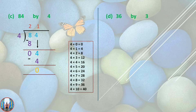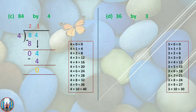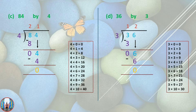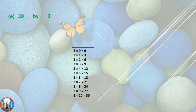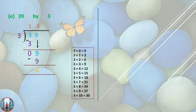Question D: 36 by 3. We write the table of 3. 3 ones are 3, 3 minus 3 equals 0, then bring down the 6. 3 twos are 6. The quotient is 12 and the remainder is 0. Question E: 39 by 3. We write the table of 3. 3 ones are 3, 3 minus 3 equals 0. The quotient is 13 and the remainder is 0.